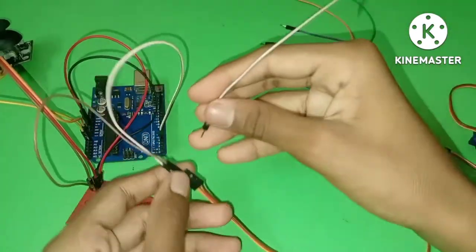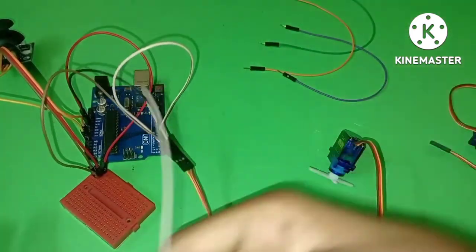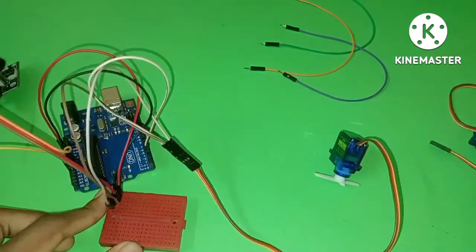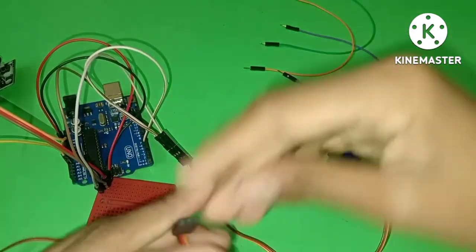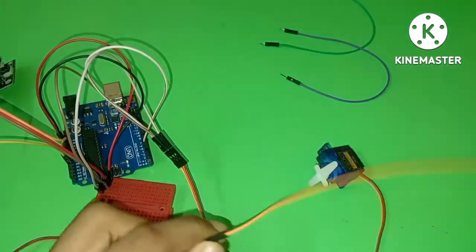The last wire is brown, which is the ground connection. Connect the brown wire to ground, and connect the digital pin 5 to the connector as well.